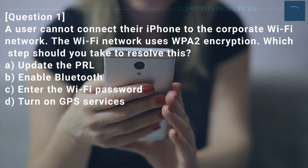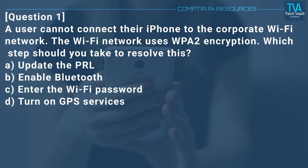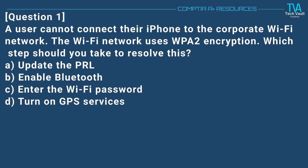Question 1. A user cannot connect their iPhone to the corporate Wi-Fi network. The Wi-Fi network uses WPA2 encryption. Which step should you take to resolve this? A. Update the PRL. B. Enable Bluetooth. C. Enter the Wi-Fi password. D. Turn on GPS services.